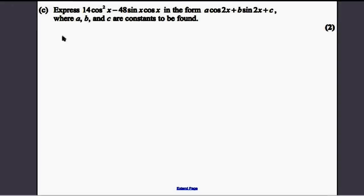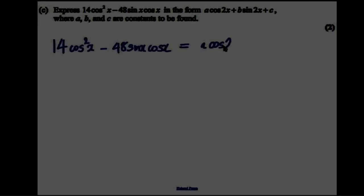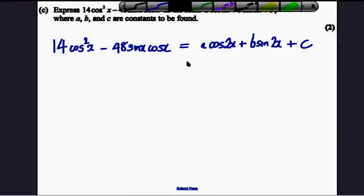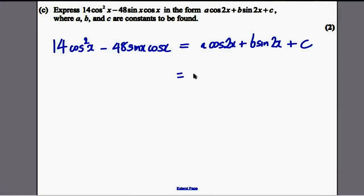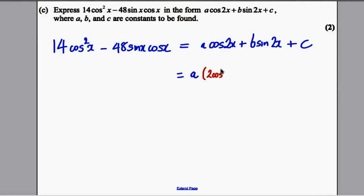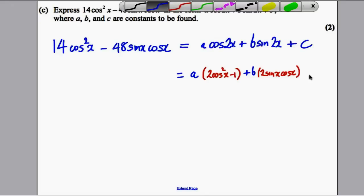Part C: Express 14cos²x - 48sinxcosx in the form acos2x + bsin2x + c. Let's write down cos2x in terms of cos squared: 2cos²x - 1. And write sine2x in terms of its expansion: 2sinxcosx. Keep C as it is.